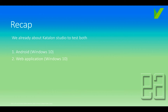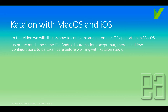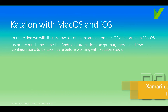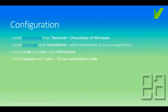Today we're going to talk about something a little different — Katalon with Mac operating system and iOS application automation. It's pretty much the same as Android automation, except there are a few configurations to take care of before working with Katalon Studio for iOS, because Mac has brought many restrictions. These restrictions are something we addressed in the Xamarin video series, where we installed Xamarin Test Cloud to inject the Calabash server. Here, we have to work with what is called Appium XCUITest, so it can identify elements and talk to the application under test via HTTP server.